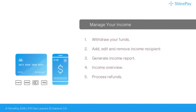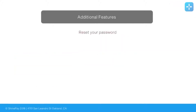And then process refunds. For refunds, your customers have the ability to request a refund for every transaction, and then you have the option to approve this on your Shine Insights account. You can also reset your password. You have your customer account overview. And then you can add or remove attendants. Gone are the days where attendants have to use quarters to activate machines — now they can just use Shine Attendance and activate a machine without using a quarter. I'll link down the video below on how to use Shine Attendance.